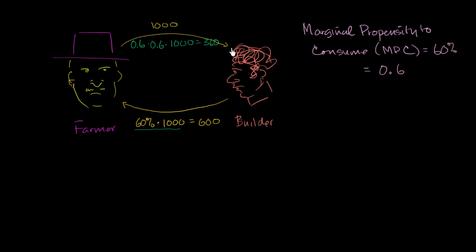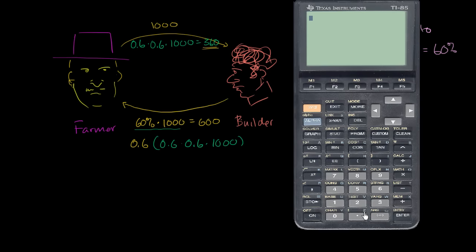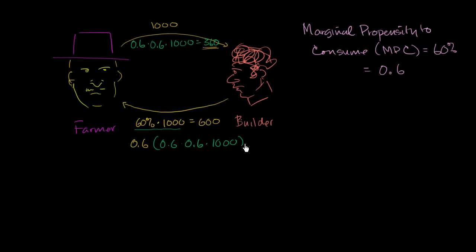Now the builder says, 'I got that initial $1,000, I spent $600 of that, but now I got another $360. I have a marginal propensity to consume of 0.6, so I'm going to spend 60% of that.' 60% of $360 is 0.6 to the third power times $1,000. So 0.6³ × 1,000 gives us $216.